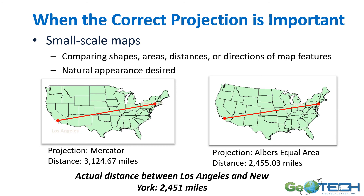When the correct projection is important — especially on small scale maps — you need to be able to calculate shapes, areas, distances, and directions accurately. If you use the wrong projection, you're going to get the wrong answer. On the left, the Mercator projection shows a distance of over 3,124 miles. On the right, using the Albers Equal Area projection, the distance is shown as 2,455 miles. The actual distance is very close to that Albers Equal Area projection, while the Mercator projection is really off by a lot.